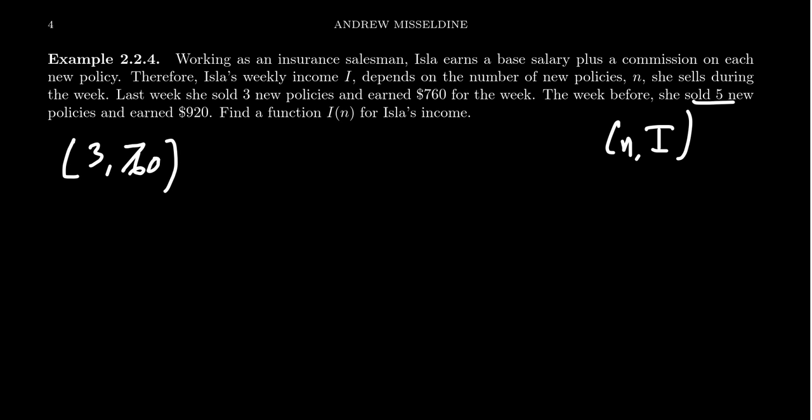The week before that, she sold five new policies and she earned nine hundred and twenty dollars. So we have a different data point when n was five. The income was nine hundred and twenty. Now assume that's the only thing that determines her income here, a flat salary that she always gets and then the number of commissions.